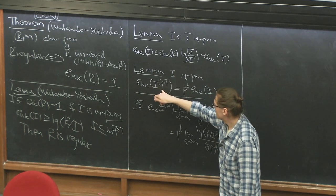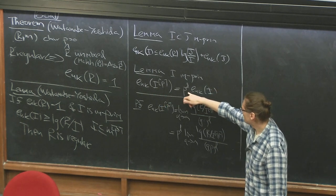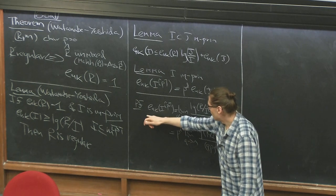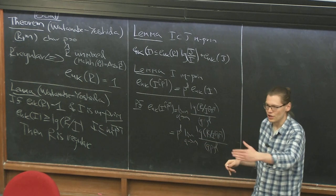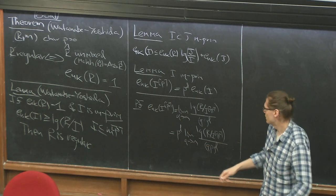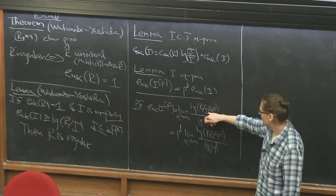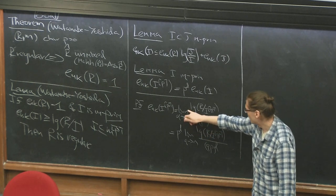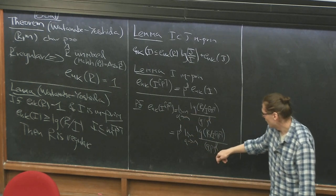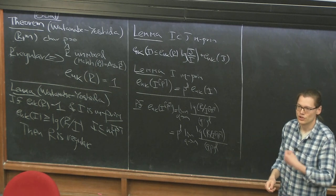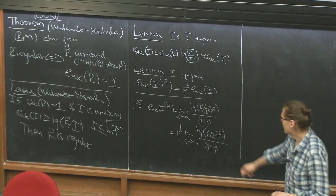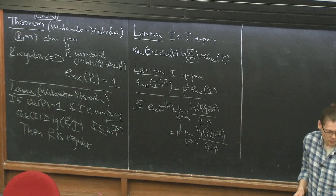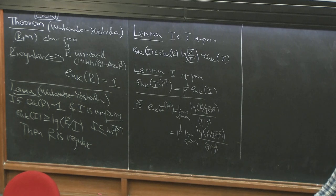The second result is also simple: the Hilbert-Kunz multiplicity of a bracket power i^[p] is p^d times the original Hilbert-Kunz multiplicity. This is an easy result coming from changing the index in the convergent sequence. We multiply both sides by p^d and recover the original Hilbert-Kunz multiplicity — a formal consequence for any convergent sequence, the same way it works for usual multiplicity.